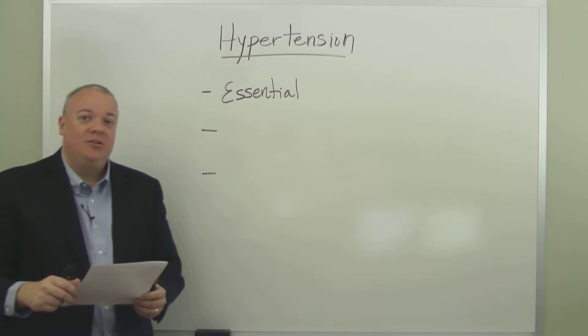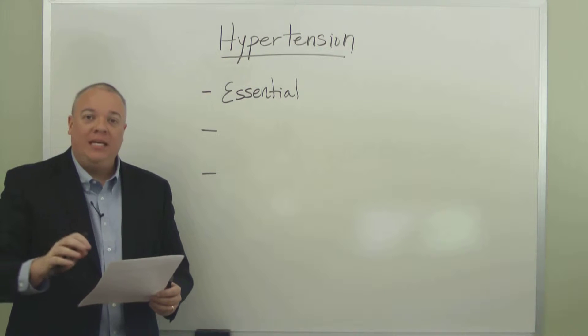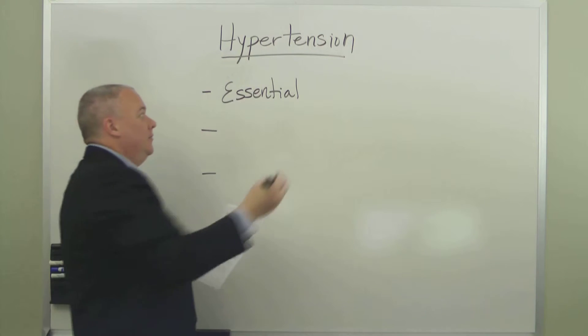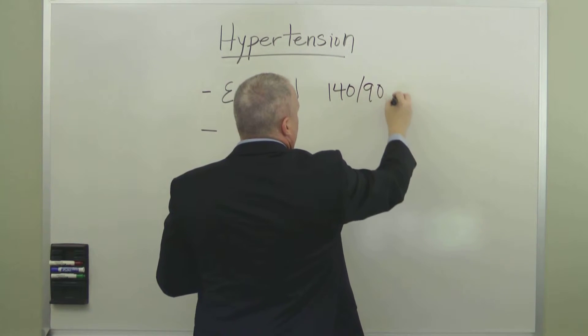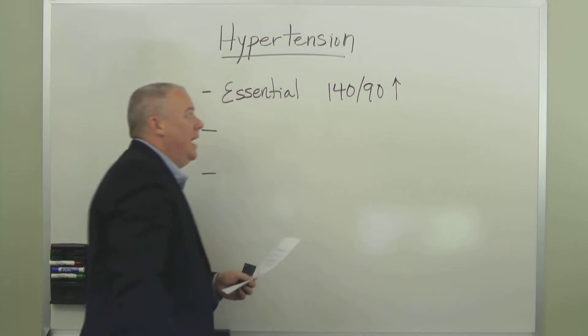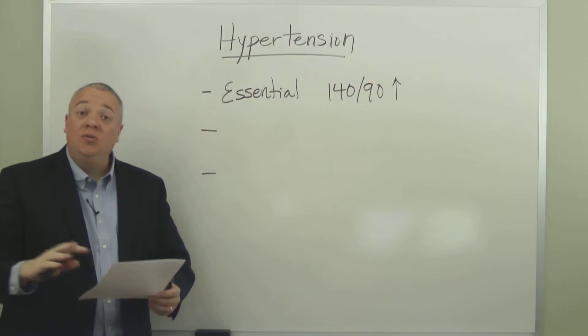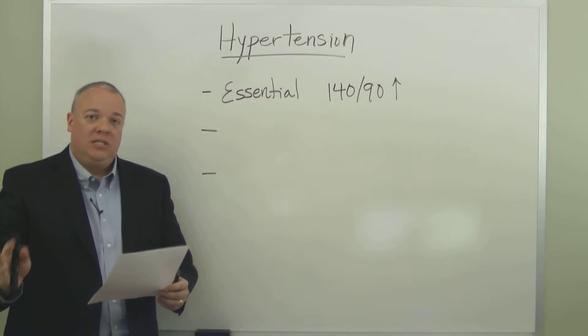Usually it is only diagnosed in patients who have had three separate blood pressure readings of 140 over 90 or higher, and it's clear that those high readings are not due to some other medical condition or disease.